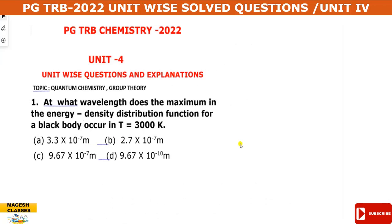First question: at what wavelength does the maximum in the energy density distribution function for a black body occur at temperature 3000 K? In the energy density distribution curve, the relation is lambda multiplied by temperature equals a constant — that is Wien's displacement constant.